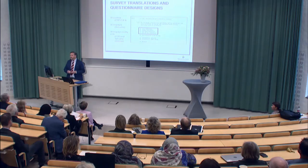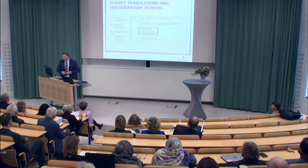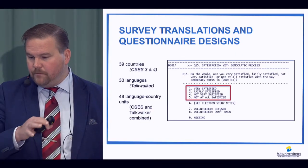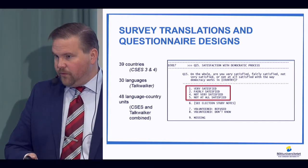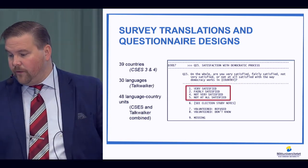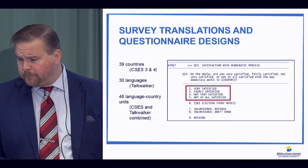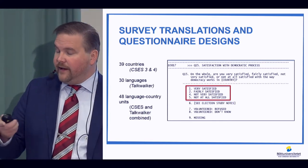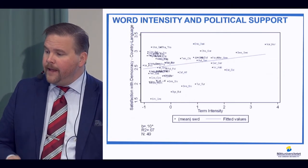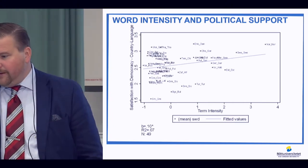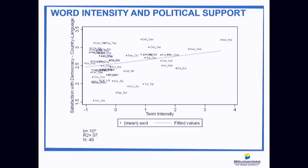Taking this into survey research, I'm using a dataset called Comparative Studies of Electoral Systems (CSES), which is a collection — a joint module in all election studies conducted around the world. I take the original questionnaires, take the term used to translate the word 'satisfied,' calculate the frequency measure, add this back to the CSES data, and see what happens. We can see the aggregated satisfaction with democracy for a country or language.